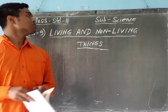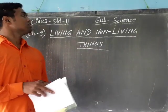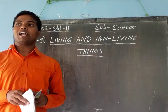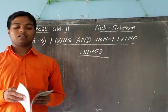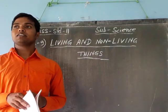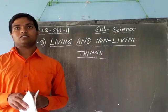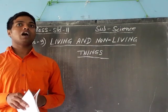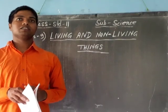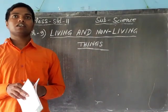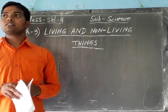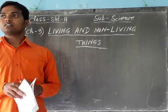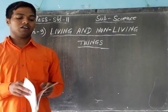First, what are living things? All plants and animals are living things. Such as cow, dog, cat, potted plants, guava plants, etc.